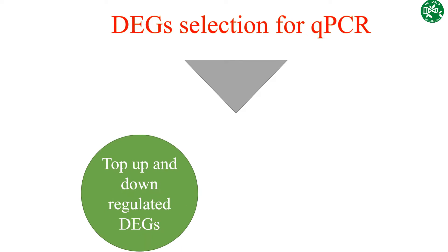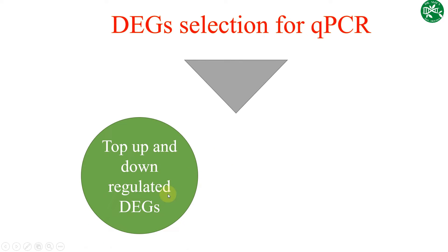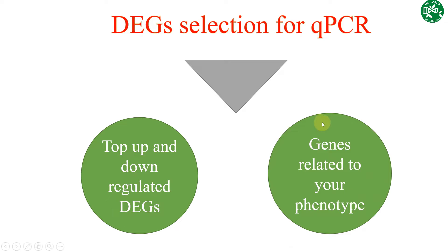The DEG selection for qPCR can be done in two ways. The first way is that we can select our top up and down regulated DEGs, and the second way is that we can select those genes which are related to your phenotype. We will discuss one by one how we can select our top up and down regulated DEGs and how we can select our genes related to our phenotype.